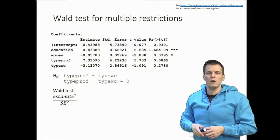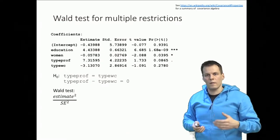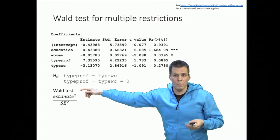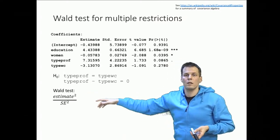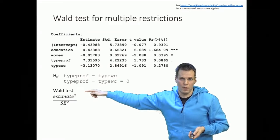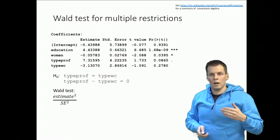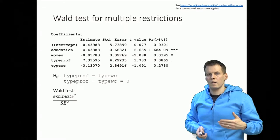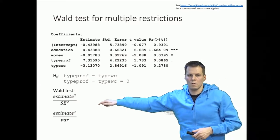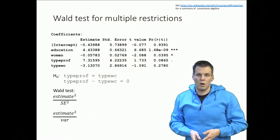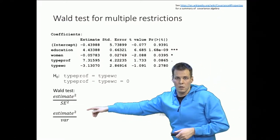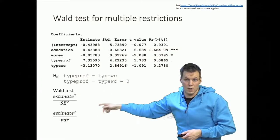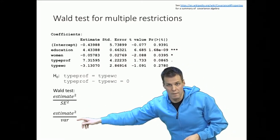How about the standard error squared? The standard error quantifies the estimated standard deviation of the estimate if we repeated the same random sample over and over from the same population — how much the estimate varies due to sampling fluctuations. The standard error squared equals the variance of the estimate. We have the estimate — type professional minus type white collar — we plug in the numbers, get about minus 10, raise it to the second power to get about 100, and then divide by the variance of that estimate.